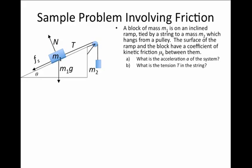There's the tension T in the string, which is trying to pull the block up the ramp, and as a result of it trying to pull up, the kinetic force of friction is trying to pull it down the ramp.